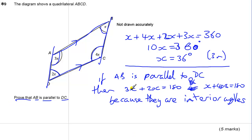So, 3x, 3 times 36 plus 2 times 36. Okay, that's going to be 108 plus 72, which is 180.